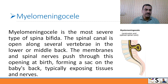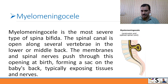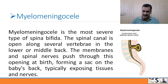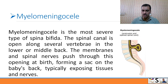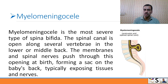The third type is myelomeningocele, which is the most severe type of spina bifida. Here, the spinal cord is open along with several vertebras in the lower middle back. The membranes and even spinal nerves push through this opening at birth, forming a sac on the baby's back and typically exposing the tissue as well as the nerves.